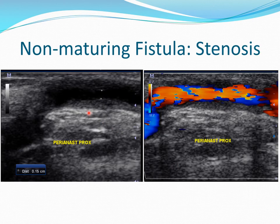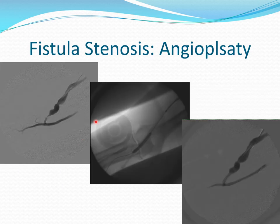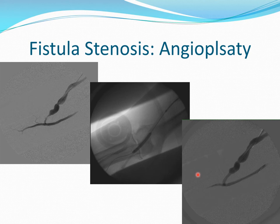This is the ultrasound picture of the first example — stenosis causing non-maturation. This is the total vein diameter, but there is thickening of the walls on either side, and the actual lumen is measured to be 1.5 millimeters. What can we do? We can place a sheath, then a balloon, and go ahead and do angioplasty. This can be performed in multiple steps — starting with a 3 or 4 millimeter balloon, then bringing the patient back in two weeks for a 5 or 6 millimeter balloon — to gradually achieve increased flow so the fistula can mature in time.